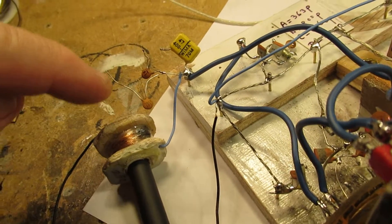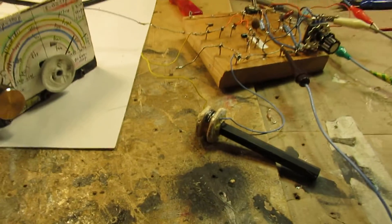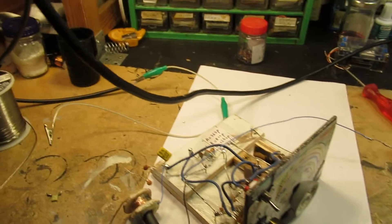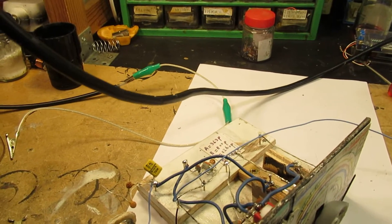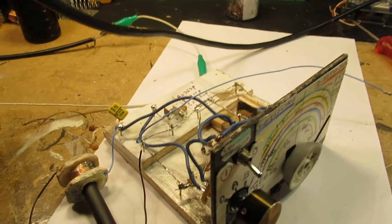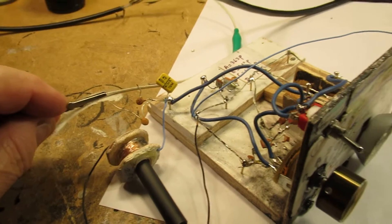180 picofarad, 10 picofarad, 47 picofarad. The radio is tuned to a certain frequency. The antenna is a 10-meter long wire antenna in my garden. So now I connect the antenna to the 180 picofarad capacitor.